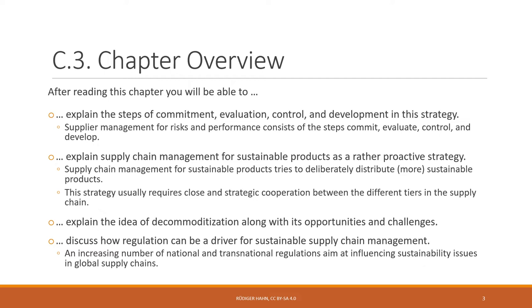Then we move on to the second strategy of sustainable supply chain management — the strategy of supply chain management for sustainable products — which is a rather proactive strategy. You'll learn that this approach deliberately tries to distribute sustainable products, or more sustainable products compared to conventional ones.